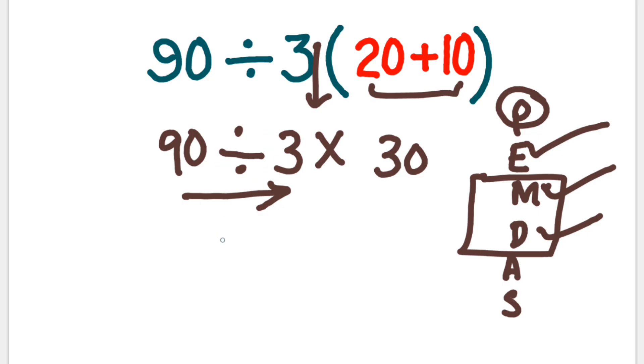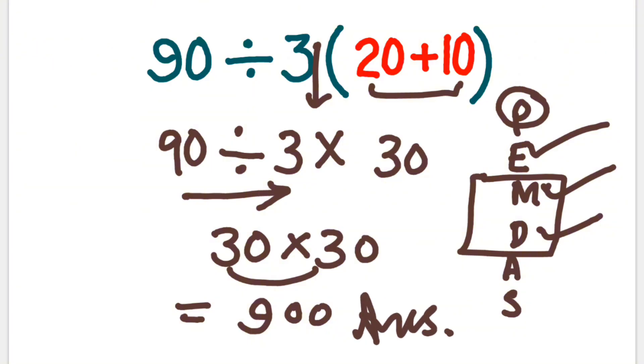So 90 divided by 3 equals 30 times 30. 30 times 30 means 0 times 0 and 3 times 3 will be equal to 9. So 900 will be our correct answer.